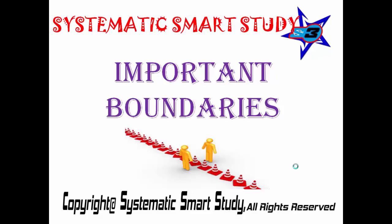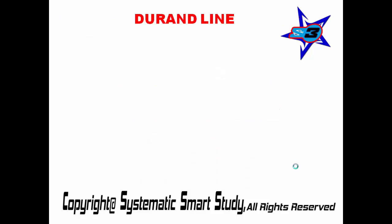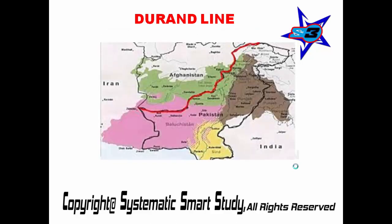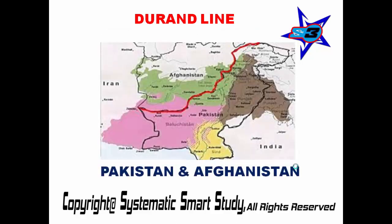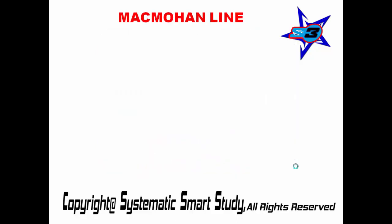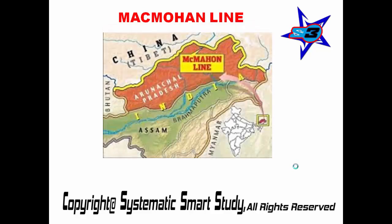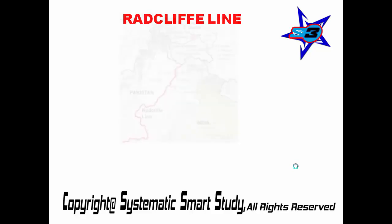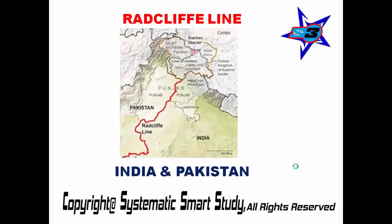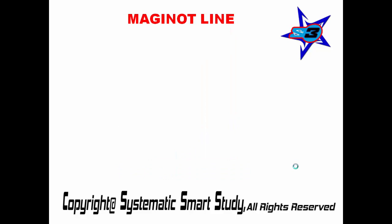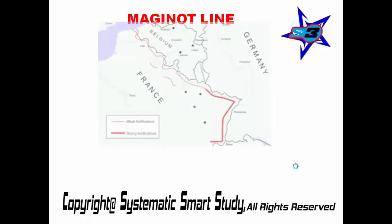Hello, welcome to the Systematic Smart Study. Today's topic is important boundaries. So let's start the session. Durand Line is between Pakistan and Afghanistan. McMahon Line is between India and China. Radcliffe Line is between India and Pakistan. Maginot Line is